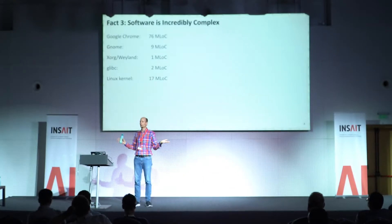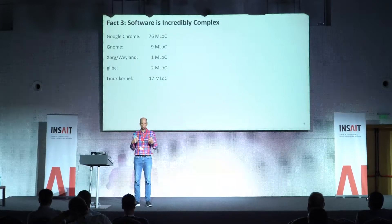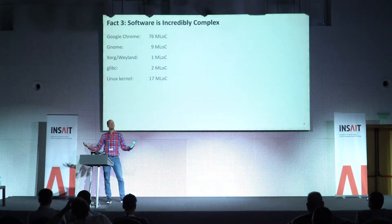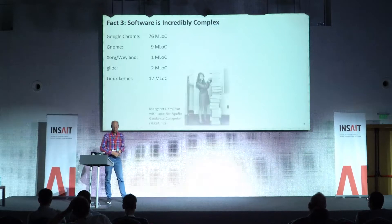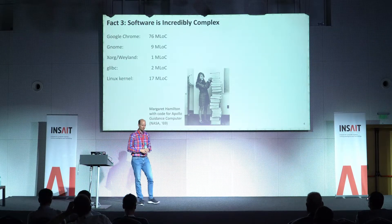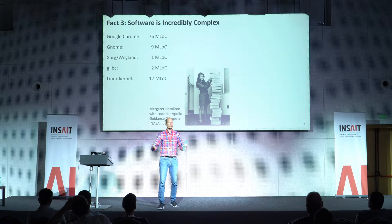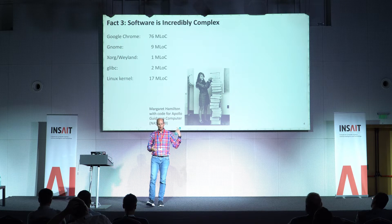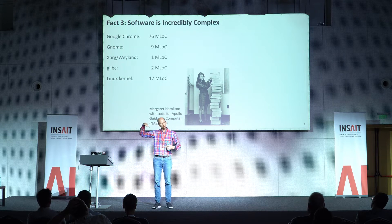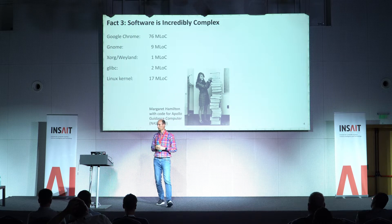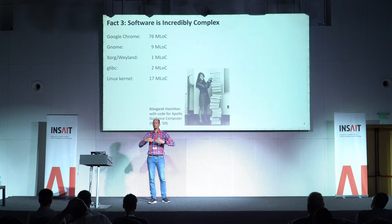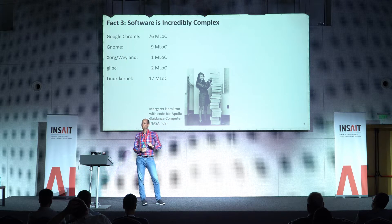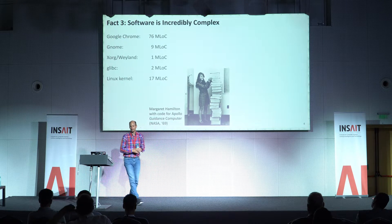I'm telling you these really large numbers, but it was hard for me to imagine what this complexity actually means. Let me give you an example. I love showing this picture. This is Margaret Hamilton, who was leading the team writing the code for the Apollo guidance computer. She stands next to a printed-out stack of all the code running on the system. This was written in assembly, very low level, very low density of code. And let's be generous — this is about two meters of complexity.